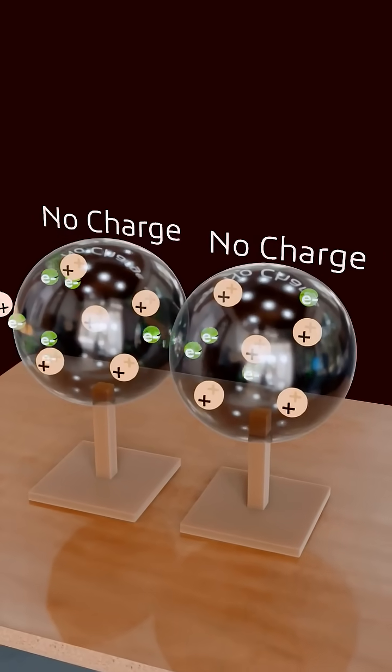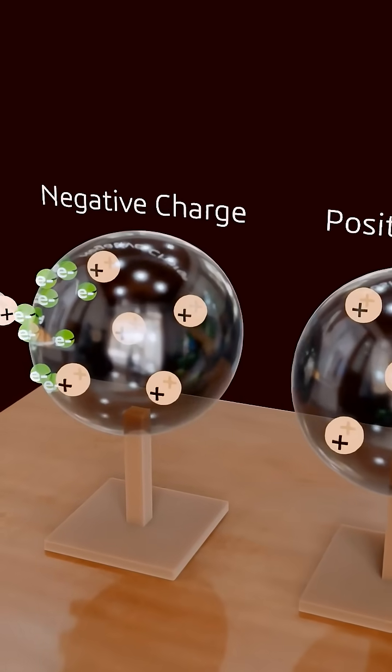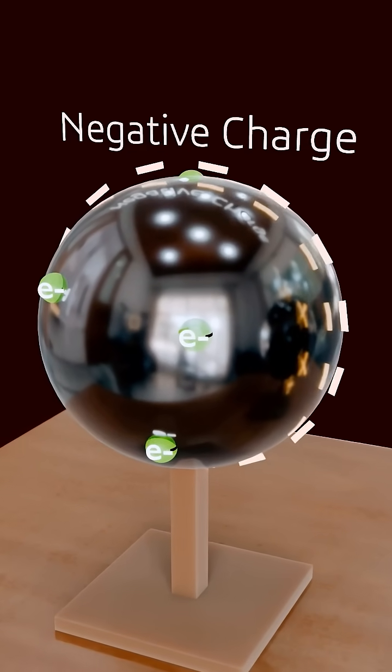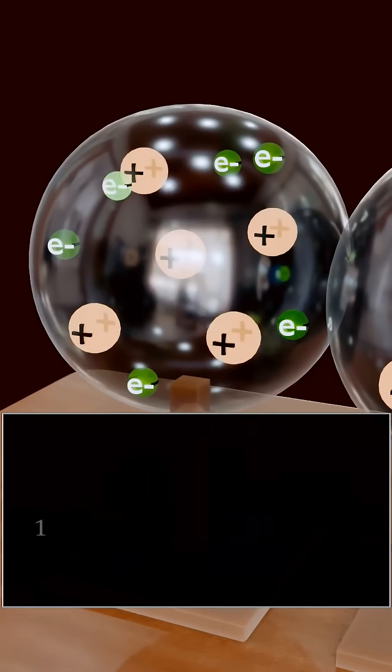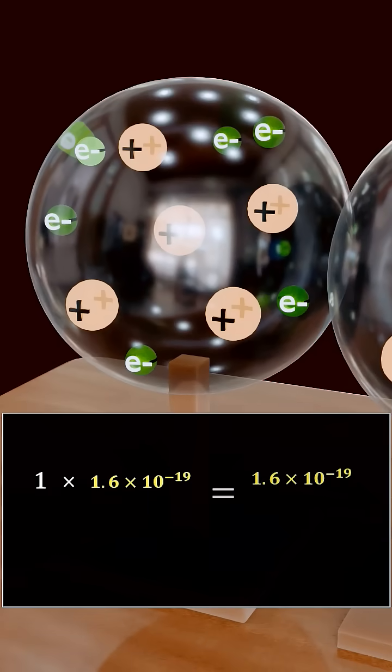This means when an object gains charge, it doesn't get random amounts. It gets charge in whole number multiples of E, the charge of an electron. For example, if an object gains 1 electron, its charge is 1.6 into 10 to the power minus 19 coulomb.